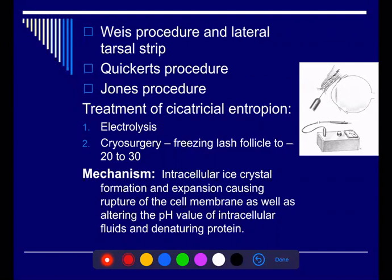In the averting suture first technique, we don't do any incision — we just apply the suture. But in the Jones procedure, we create a blepharotomy. We also do lateral tarsal strip if there is horizontal lid laxity. In the Quickert procedure, it combines both the Jones procedure and horizontal lid tightening. For cicatricial entropion, if it is mild, we can do incision releasing the fibrosis, and then treat the lashes causing trichiasis by electrolysis or cryosurgery.